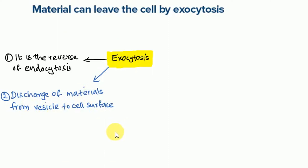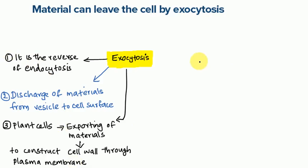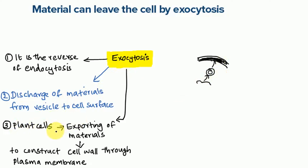In plant cells, materials needed to construct the cell wall are exported through the plasma membrane, and this is possible by exocytosis. The plasma membrane lies beneath the cell wall. Required materials — for example, from the Golgi — are transported as vesicles, fuse to the plasma membrane, and are exported to the outside. This exportation of cell wall materials in plant cells is the first example of exocytosis.